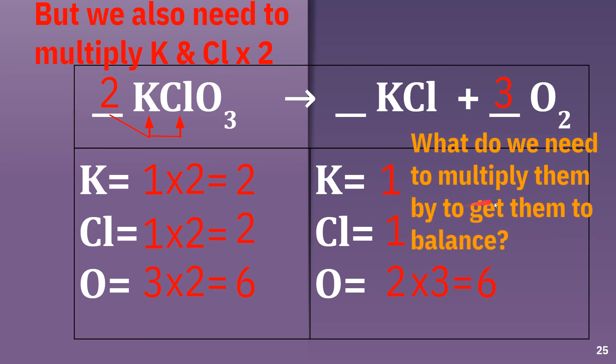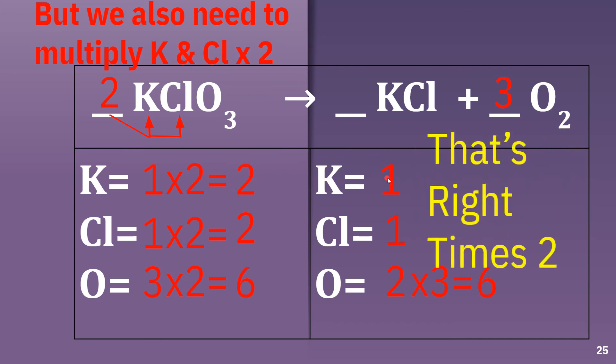What do we need to do? What do we need to multiply them by to get them to balance? Well, if we have 2 over here and 1 over here, what can we multiply 1 times to get 2? That's right, times 2.